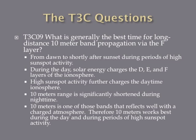What is generally the best time for long distance 10 meter band propagation via the F layer? The answer is from dawn to shortly after sunset during periods of high sunspot activity. Sunlight during the day will charge the ionosphere. When you throw sunspots into the mix, you're going to have a very highly charged ionosphere. 10 meters is one of those bands that will reflect very well off a highly charged ionosphere, so a lot of 10 meter activity will occur during the daytime when there's a lot of sunspot activity.